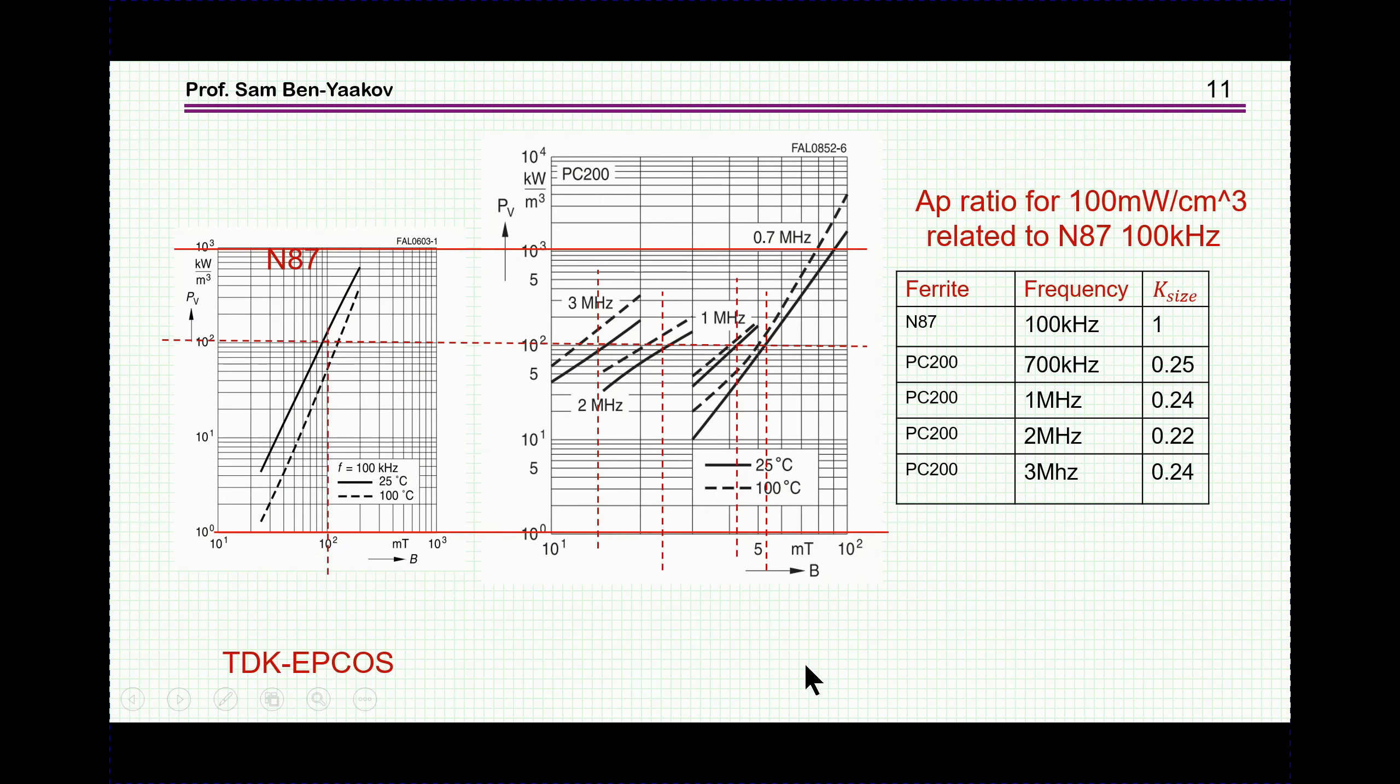Let's have a look now at what really happens in the real world. I've taken an example of two ferrite materials, one N87, one PC200, two of them of TDK Epcos. This is just an example, no endorsement here. There are many companies who are making these ferrites, and this is just an example.